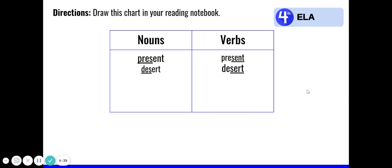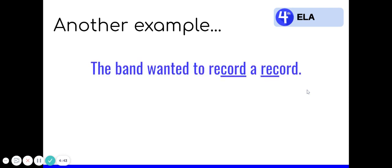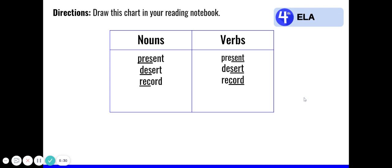All right, let's look at another example. The band wanted to record a record. All right, our homographs are record and record. Which one is the noun? Which one is the verb? Well, record is what they are doing, recording their music, which is an action. So record is a verb. Record is another name for what you might call a CD, a record. It is the object that they put the music on. That is a thing. So a record is a noun. Let's add these homographs to our chart. Remember to underline the stressed syllables.